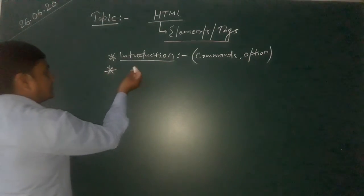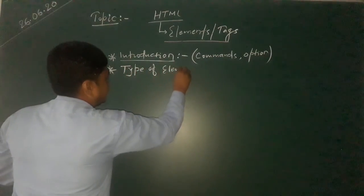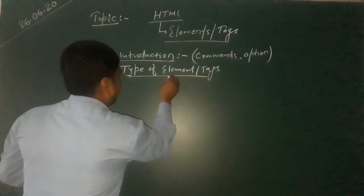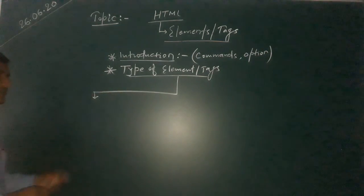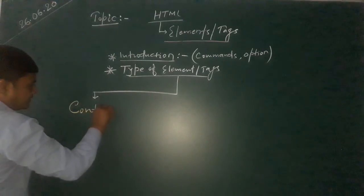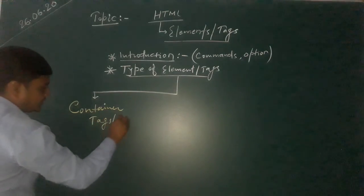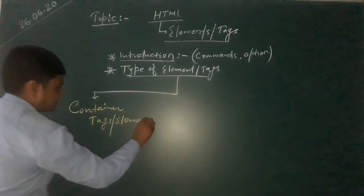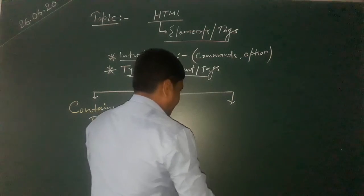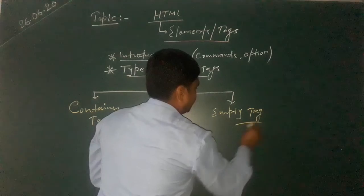There are mainly two types of tags or elements in HTML: container tags or elements, and empty tags or elements.